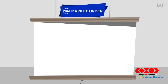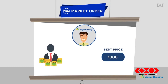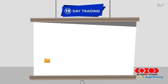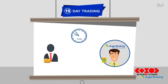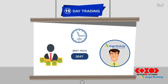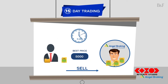14. Market Order: It is an order that an investor makes through a broker or brokerage service to buy or sell an investment immediately at the best available current price. It is also referred to as an unrestricted order. 15. Day Trading: Is speculation in securities, specifically buying and selling financial instruments within the same trading day.